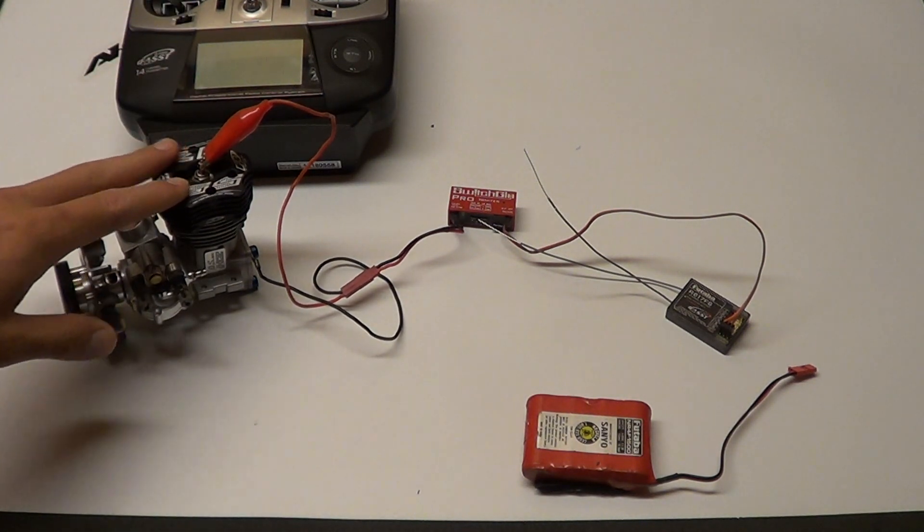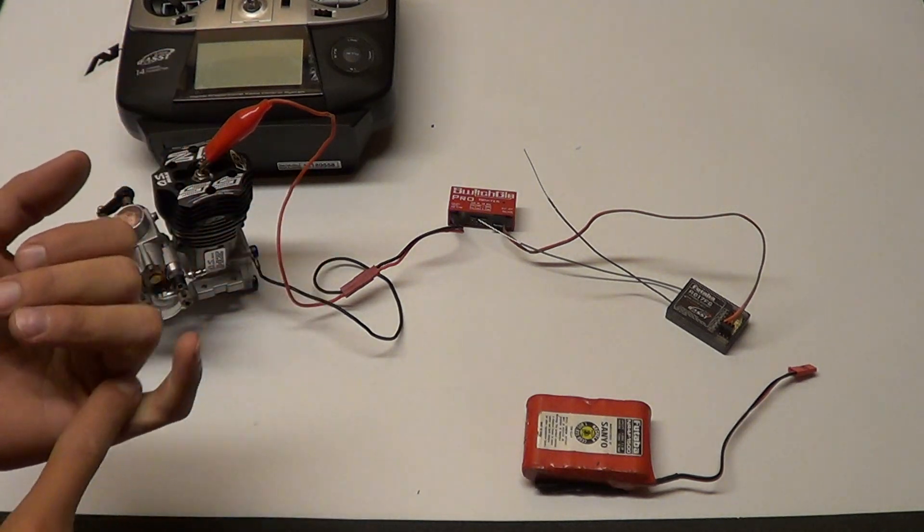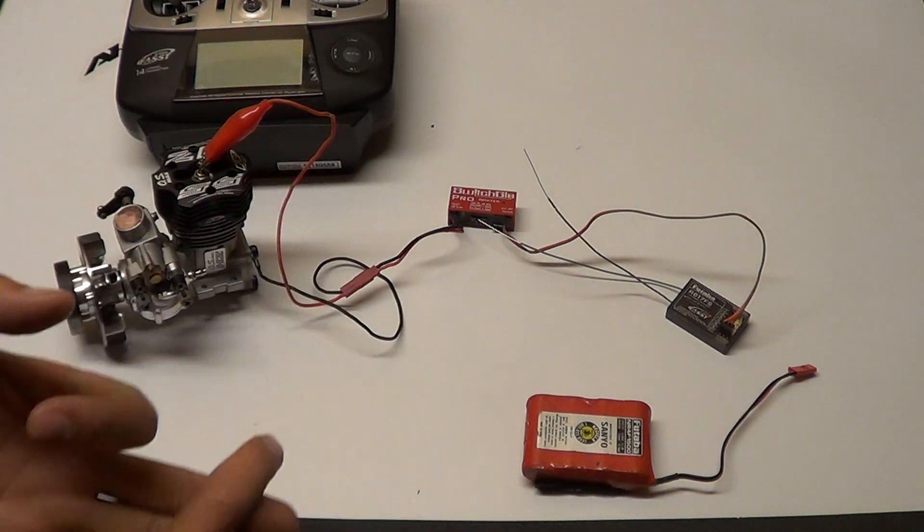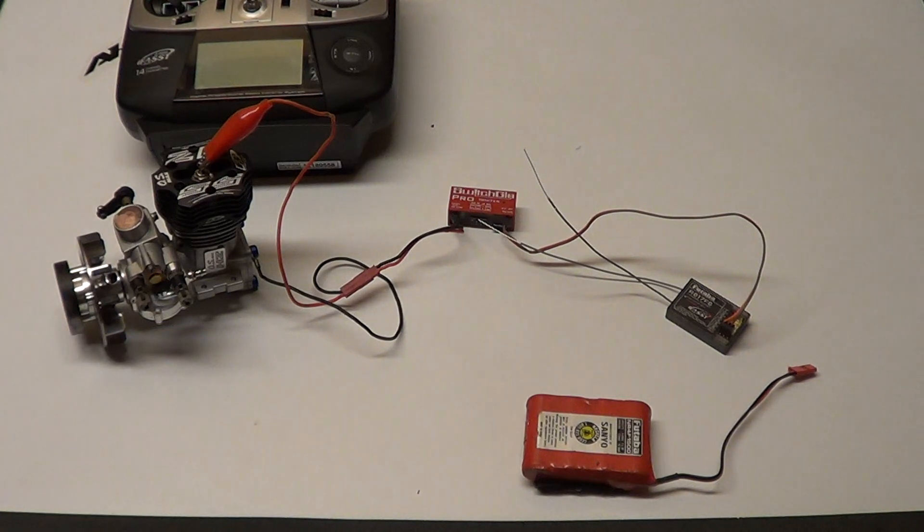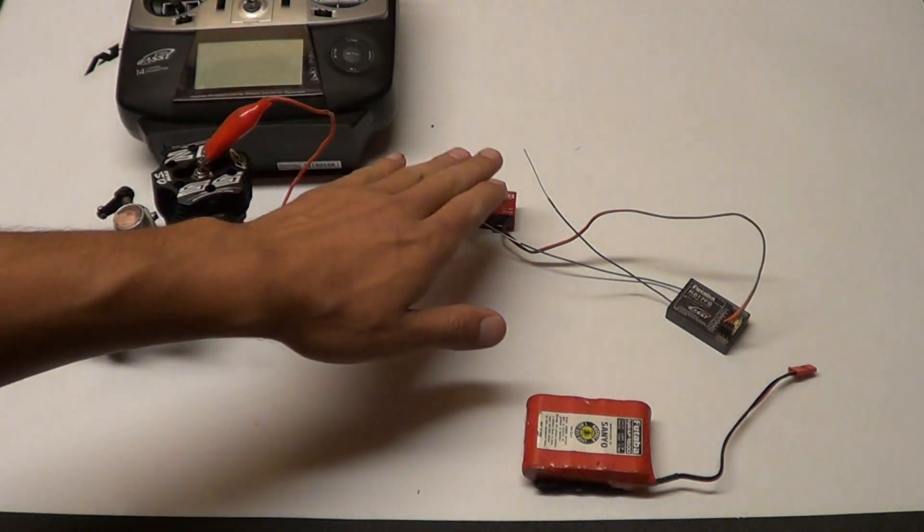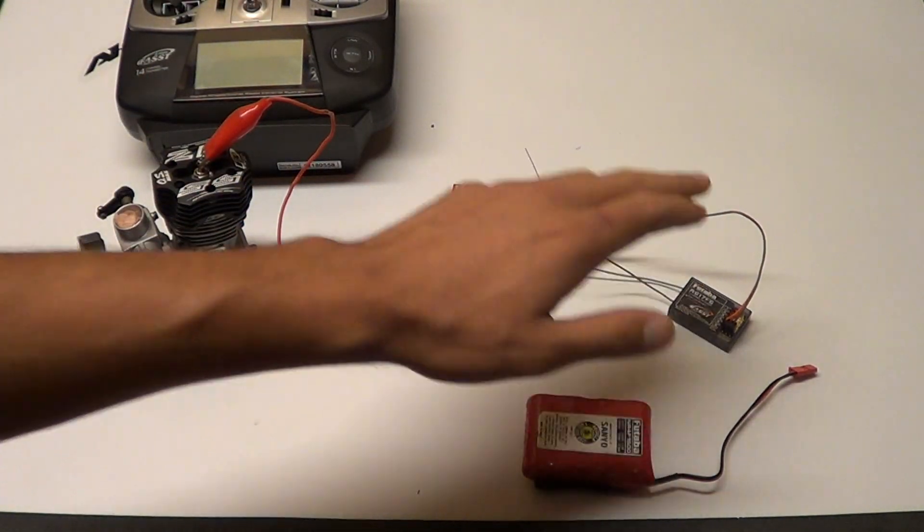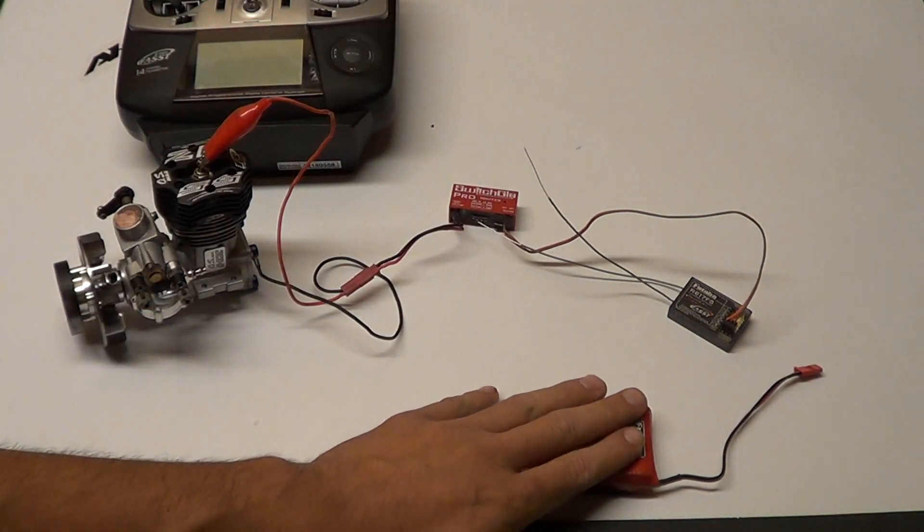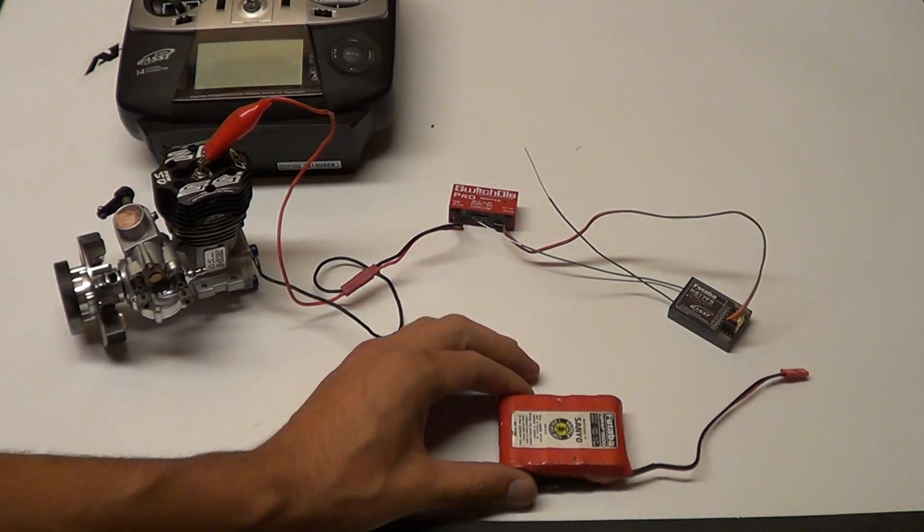This same setup applies for RC boats, helicopters, planes, and cars. We have our engine, switchglow, receiver, radio, and power source - a four-cell NiCad battery.